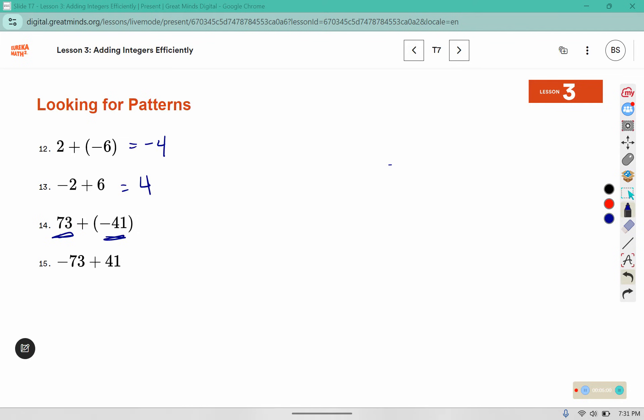In this one, which of these arrows will be longer? The 73. So we know our answer is going to be positive. 73 of them will be positive tiles, and 41 of them will be negative tiles. So if we eliminate the ones that will create 0, that will leave us with positive 32. But in this one, the negative will be the longer arrow, so we'll have negative 32.